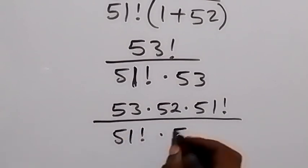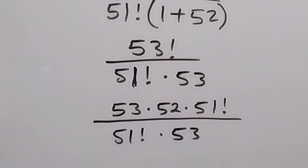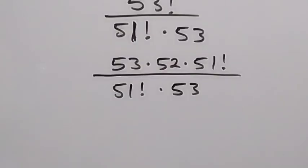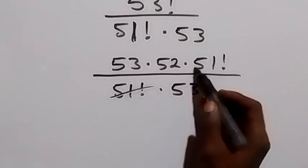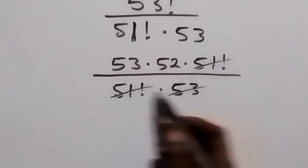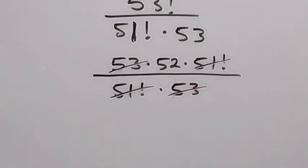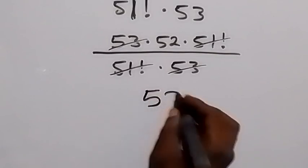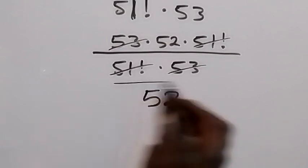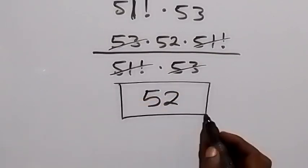From here we have 51 factorial, we cancel each other here. 53 we cancel 53 here. Then what we have left here will simply be 52, and that is the simplified form of what we are given.